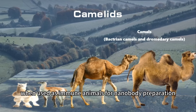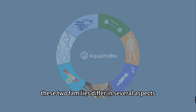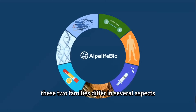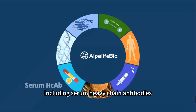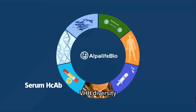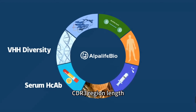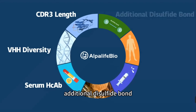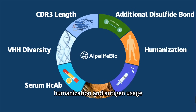When used as immune animals for nanobody preparation, these two families differ in several aspects, including serum heavy chain antibodies, VHH diversity, CDR3 region length, additional disulfide bond, humanization, and antigen usage.